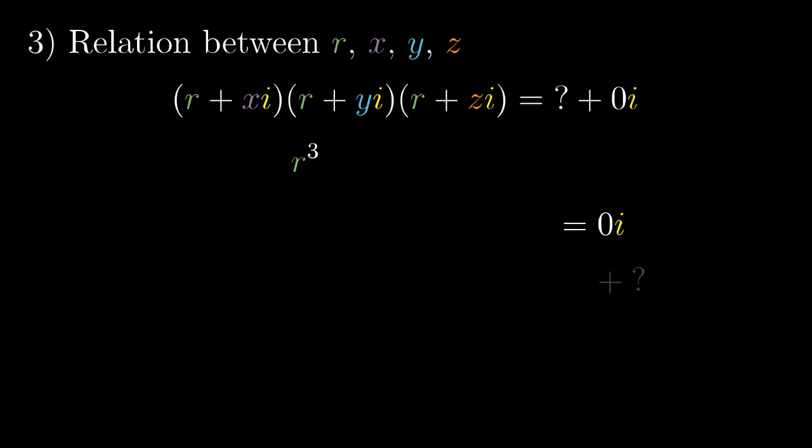Taking r from each sum, we get r cubed. It is real. We don't care about that. Taking r from two sums and something times i from the other gives i times r squared times the something. So we get three terms, r squared xi, r squared yi and r squared zi. Now take one r and two terms of form something i. The product of these two i's is minus 1. So we get a negative but real number. We don't care about that. And finally, when we multiply only terms with i's, we get two of these i's multiplied to minus 1. So the result is minus xyz times i. The coefficient near i has to be zero. So we have an identity in r, x, y, z.